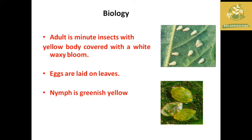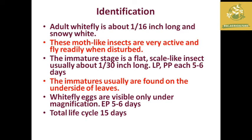The whitefly is a minor insect with a yellow body covered with white waxy blooms on the surface of leaves. Eggs are laid singly on leaves. Nymphs are greenish yellow in color. The adult whitefly is about 1/16 inch long, snowy white in color, and is usually found on the undersurface of leaves. Eggs are visible only under magnification with a period of five to six days and total life cycle of around 15 days.